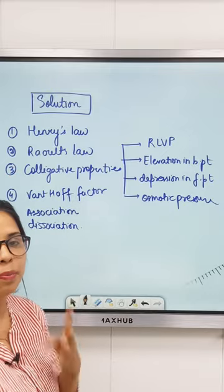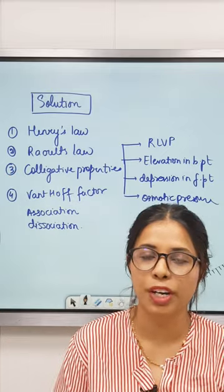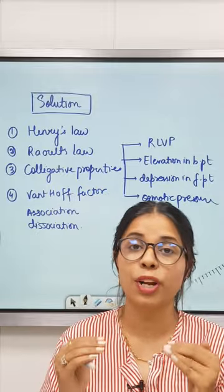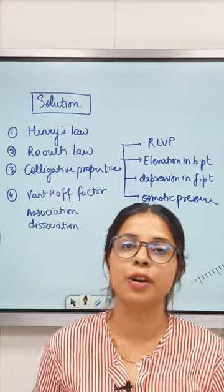Next is your colligative property, four colligative properties: relative lowering of vapor pressure, elevation in boiling point, depression in freezing point, and osmotic pressure. These four numericals, practice NCERT questions very well.